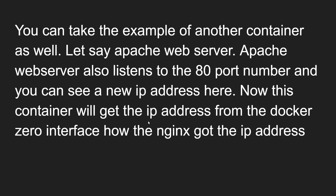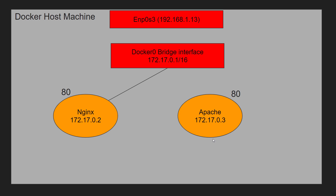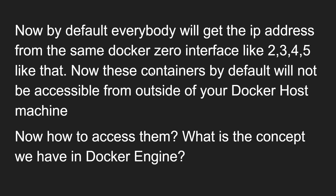Let's take another example — an Apache web server container. If I create an Apache web server container, it also listens on port 80, and a new IP address like 172.17.0.3 will be assigned by the docker0 bridge interface. Now both nginx on 172.17.0.2 and Apache on 172.17.0.3 are listening on port 80, both assigned IP addresses by the same docker0 bridge interface. By default, all these containers are not accessible from outside the Docker host machine.